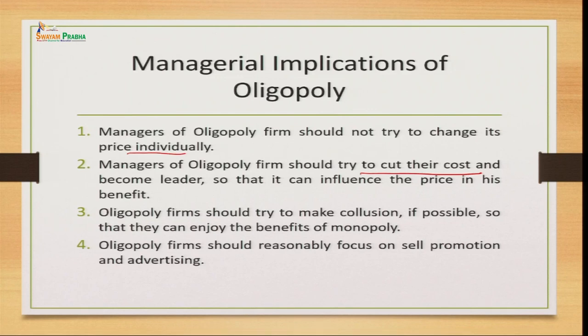Thirdly, oligopoly firms should try to make collusion. Since the products are very close substitutes and demand cannot be determined, if possible, firms should form a cartel to enjoy the benefits of monopoly — including control over supply and the advantage of price discrimination. When all firms combine together, they can charge different prices from different customers based on paying capacity and requirements.